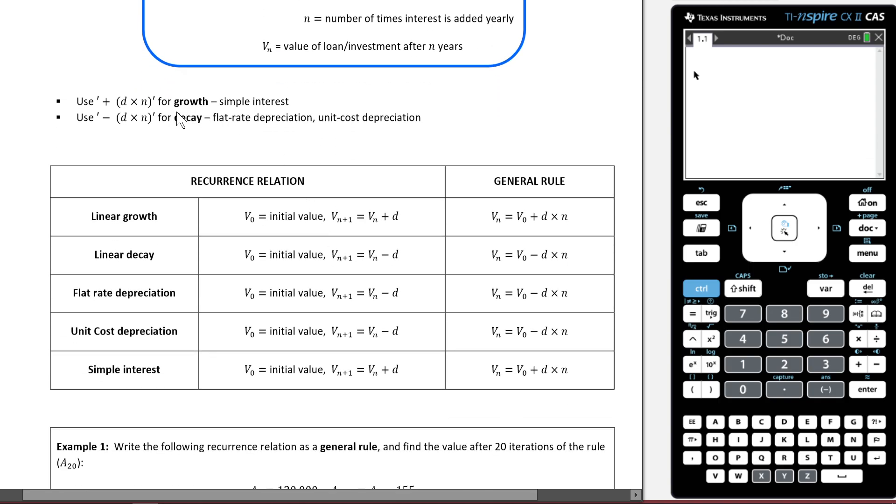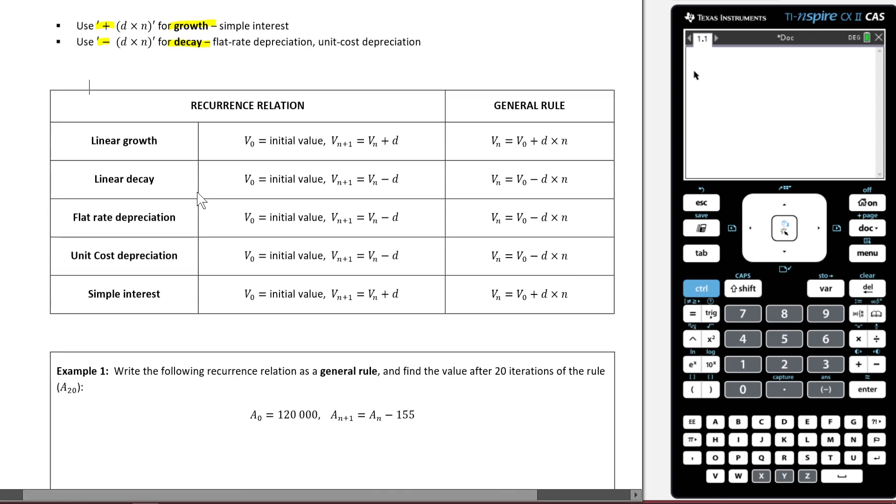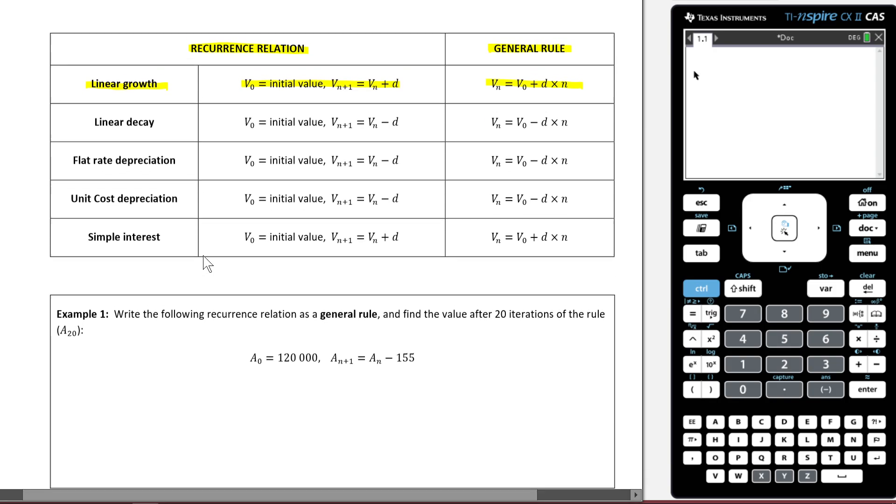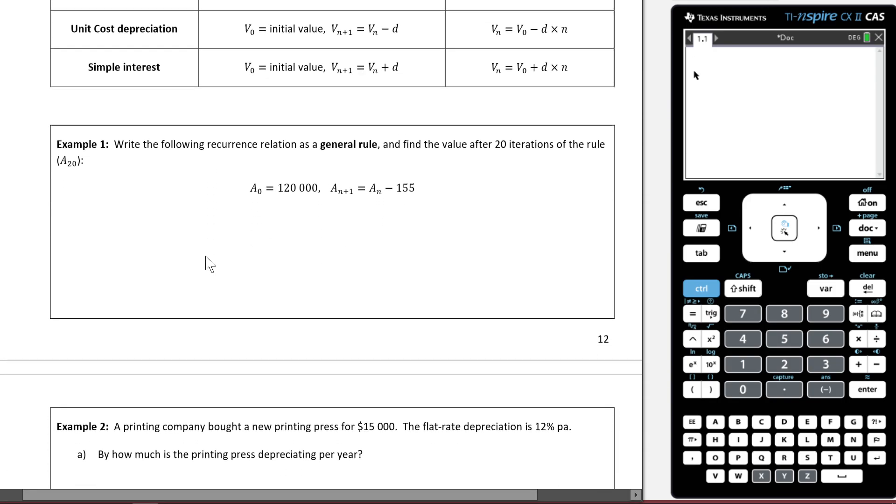Here, we've got some general tips about what a growth or decay general rule would look like. Obviously, if it's growth, we're adding. If it's decay, we're subtracting. And then we have this really handy table, which again, once we've gone through some examples and you have a better grasp of what all of this means, this will be really handy to look back on. You've got your recursion relations and then you've got their corresponding general rules. So as you can see for a linear growth, you have this and this is the same as a general rule that looks like that and so too for the rest of them. But let's now jump into an example and all of this will make sense.